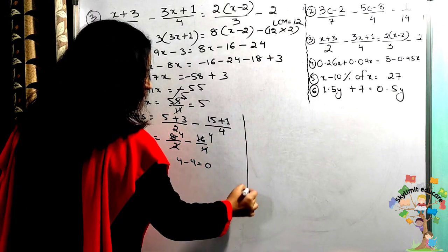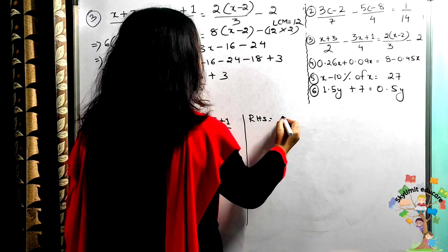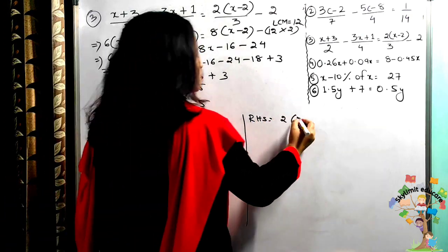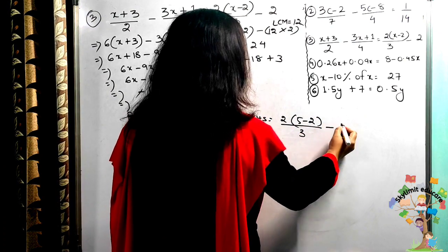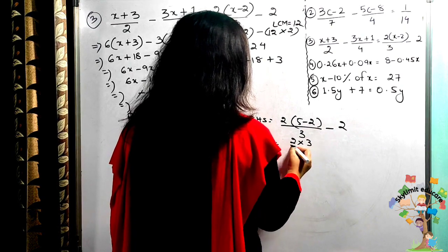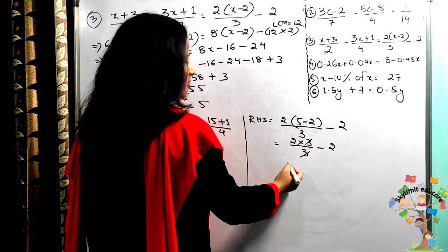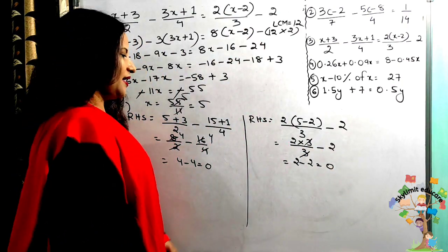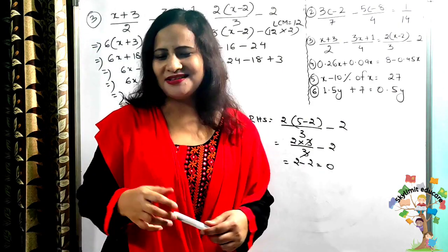Checking the right hand side: 2(x − 2)/3 − 2 with x = 5 gives 2(3)/3 − 2 = 2 − 2 = 0. Left hand side equals right hand side, so it is verified.